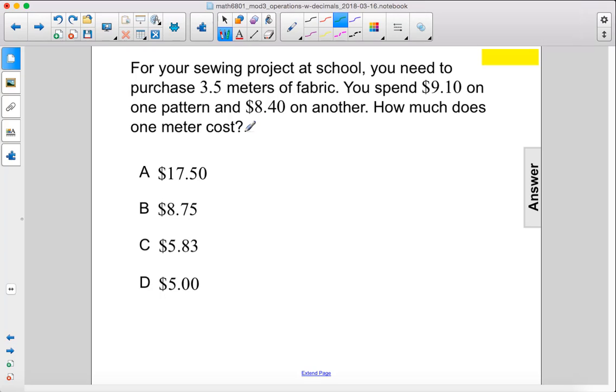Alright, so this is two steps. The first step will be adding together both of these prices to see how much you spent total, and then the second step will be dividing by 3.5 to see how much one meter cost.